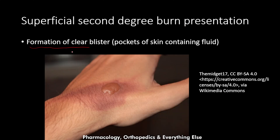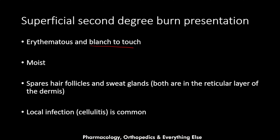There is always formation of clear blisters in the superficial second degree burn. The blisters are pockets of skin containing fluid, occurring because the epidermis detaches from the dermis below, and this space fills with fluid. The skin blanches to touch — when you press it, it becomes pale, then returns to red when released, because blood supply is still intact. The skin will be moist. This type of burn spares the hair follicles and sweat glands, as both are in the reticular layer. Local infection in the form of cellulitis is also common.